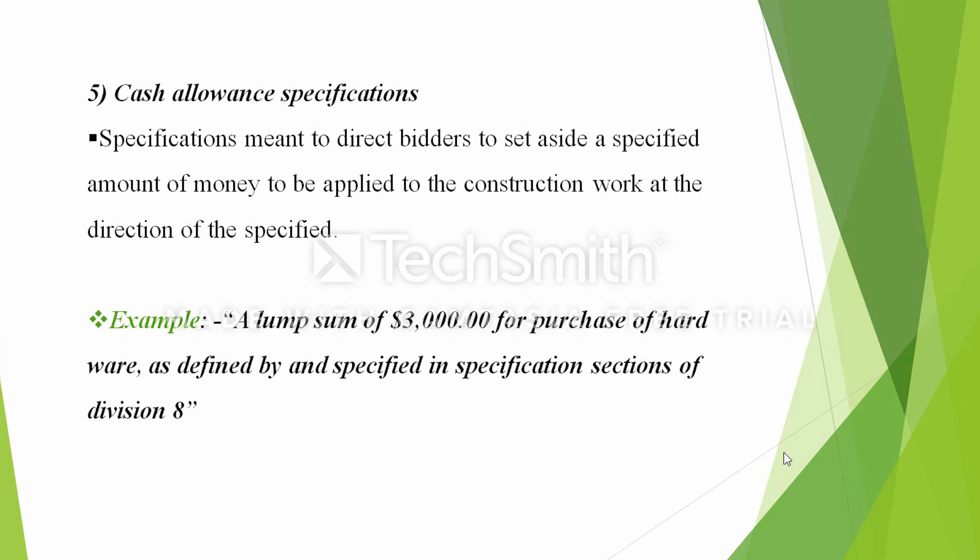There is a fair amount of detail about the descriptive specifications. If you have a cash allowance specification, it directs the bidders to set aside a specified amount of money to be applied to the construction work at the direction of the specifier. For example, a lump sum of $3,000 for the purchase of hardware as defined and specified in the specification section of division 80.